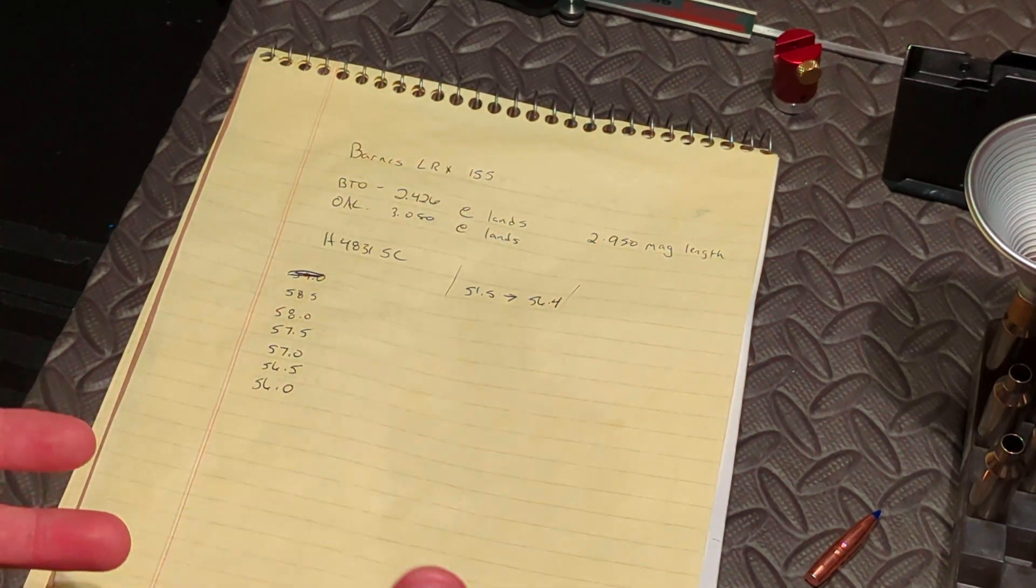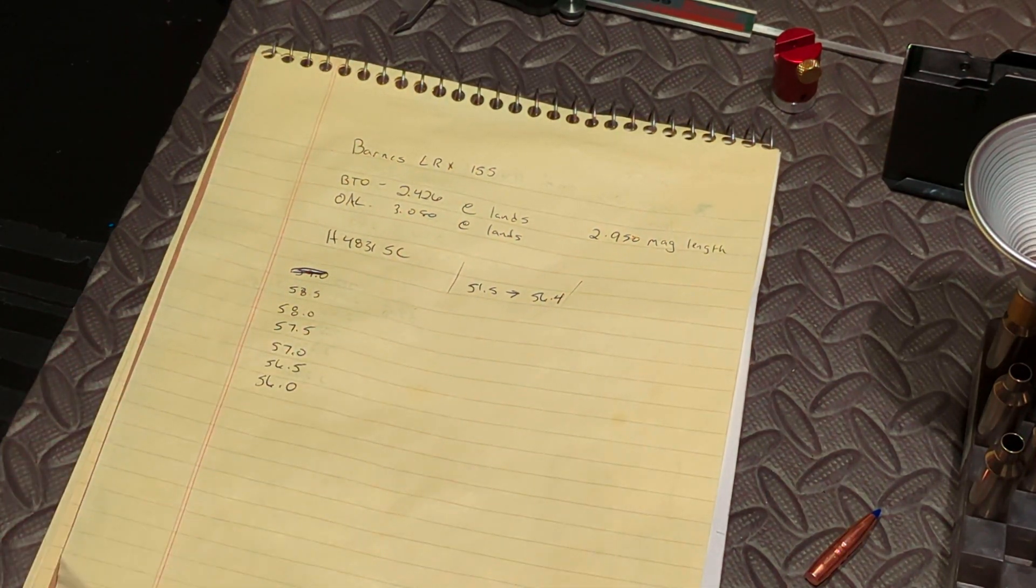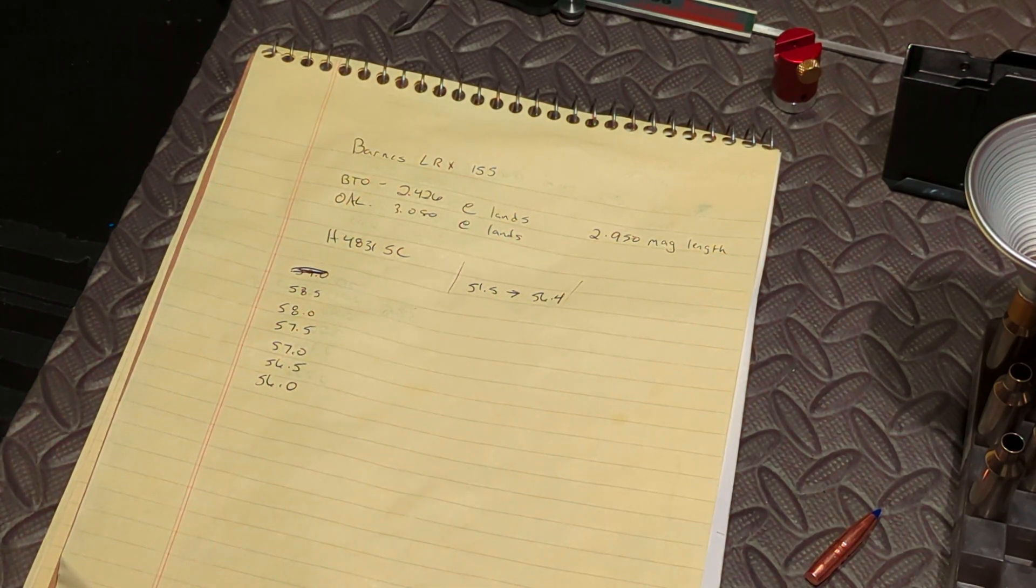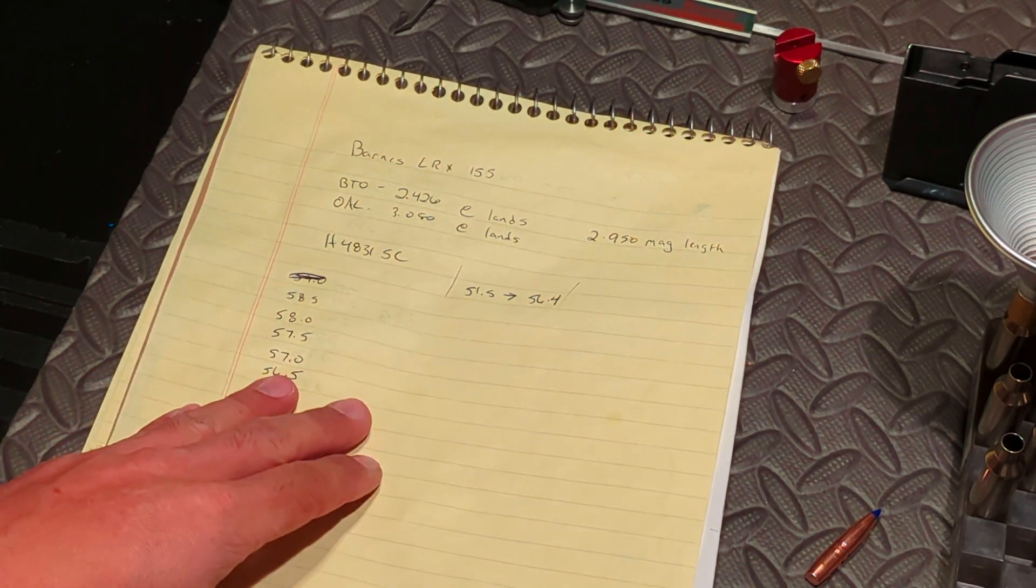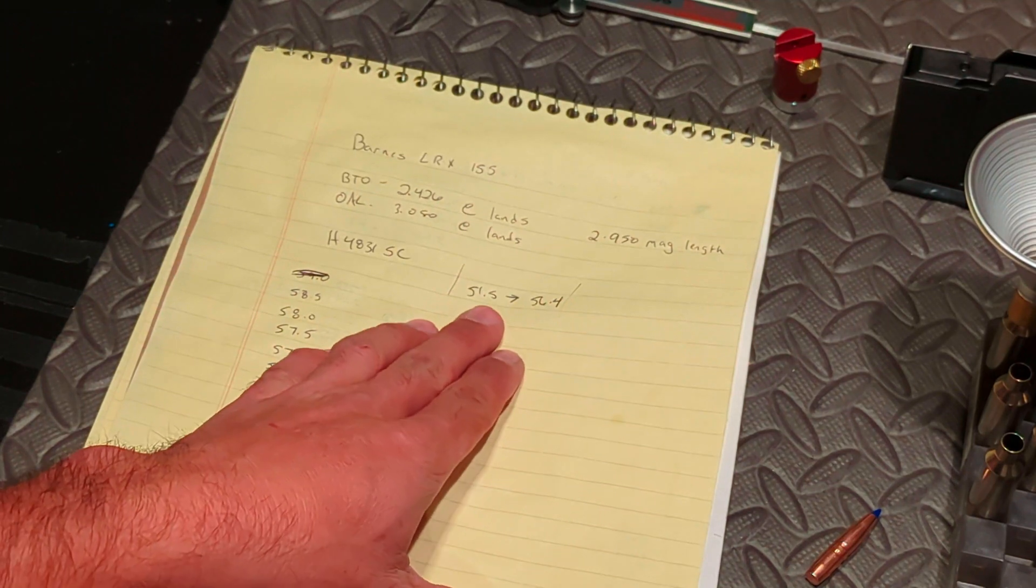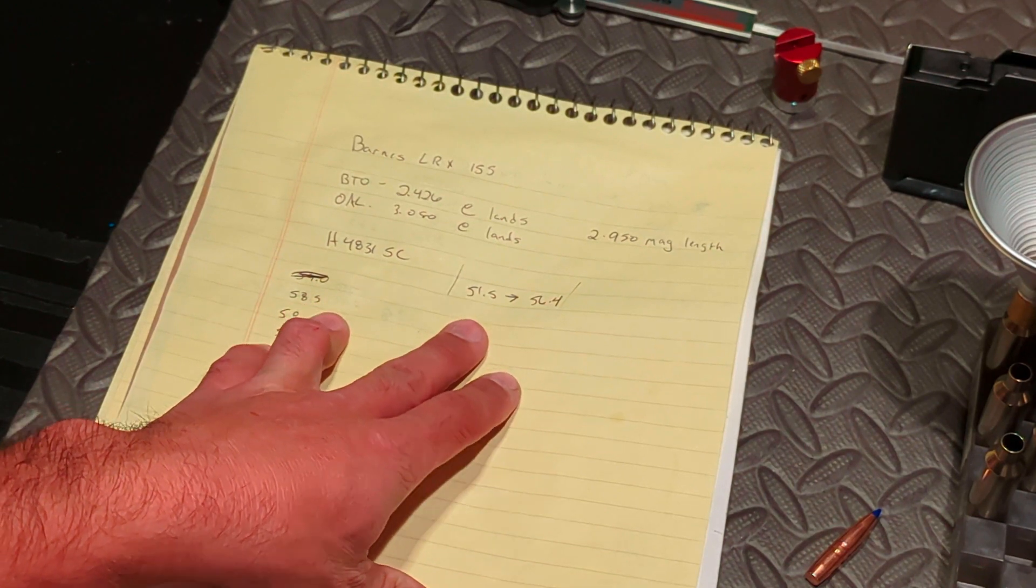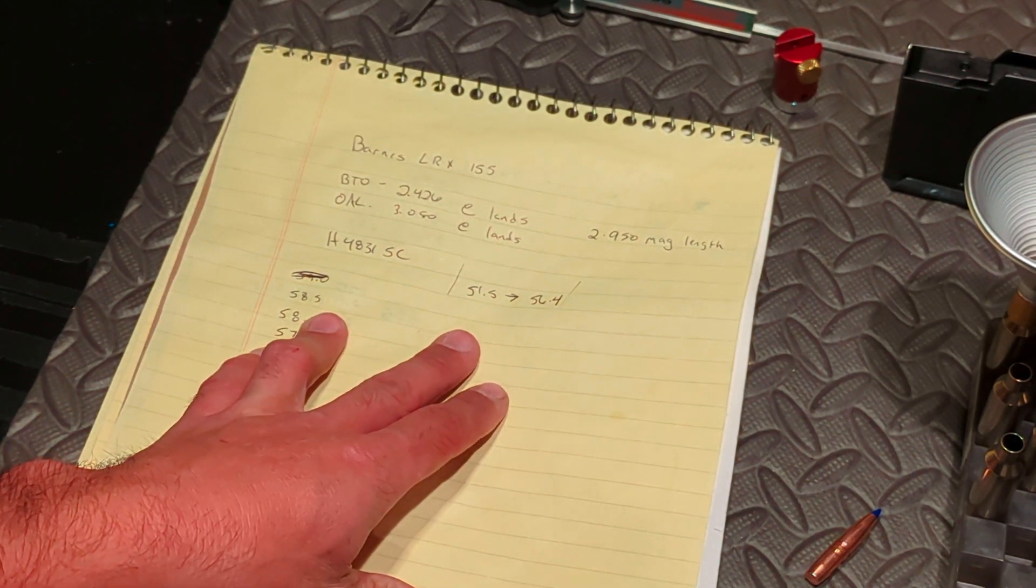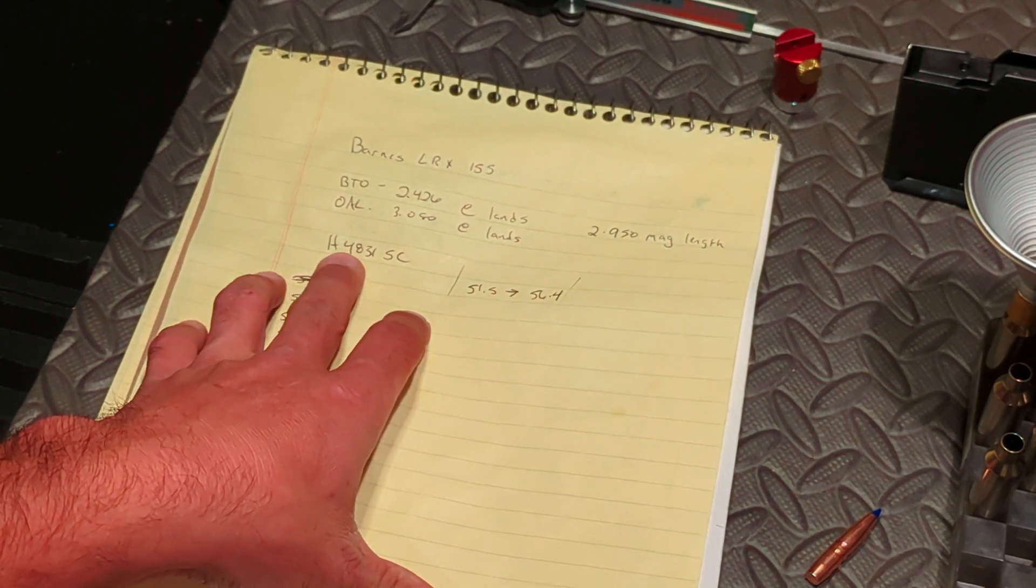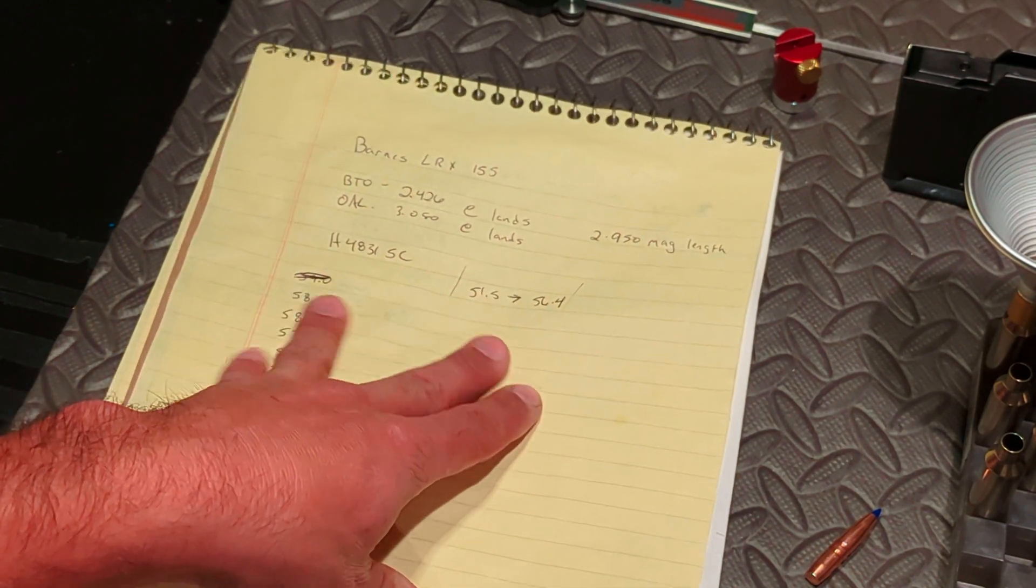Our next step is figuring out what our powder charge is going to be. I'm going to be using the Hodgkin's H4831 Shortcut. I have so much of this powder because it's worked really well for me, specifically with the Berger 170 and the Nosler 170 grain. So I'm really comfortable with this powder. I have a lot of it, and Barnes, actually thank them very much for this, you can go right to their website, choose the Barnes LRX 155 and the 270, scroll down to the bottom of the page, and they have a spec sheet that you can download where they did their own in-house load development, and they're calling for 58.5 to 56.4 grains of the H4831. So that is what they recommend.